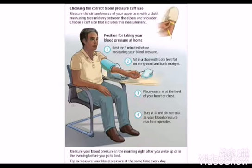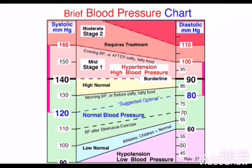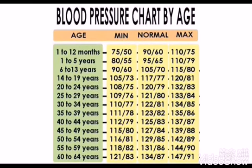The heart is a pump composed of four chambers. It is divided in the middle into a right and left side, and each side is divided further into two chambers — the upper and lower chambers. The two upper chambers, called the atria, receive the blood entering the heart. The two lower chambers, called the ventricles, pump the blood out of the heart to the rest of the body.